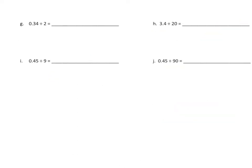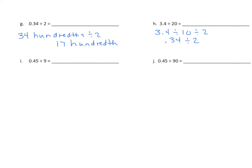Let's go on to another one — let's start with G. We're going to change that to unit form: 3 and 4 tenths divided by 10 is 34 hundredths. 3 and 4 tenths divided by 10 equals 17 hundredths, and that's divided by 2. We can now see that we're back to our original fact here, and I should have written it in standard form. So in the case of G, 34 hundredths divided by 2 is 17 hundredths.